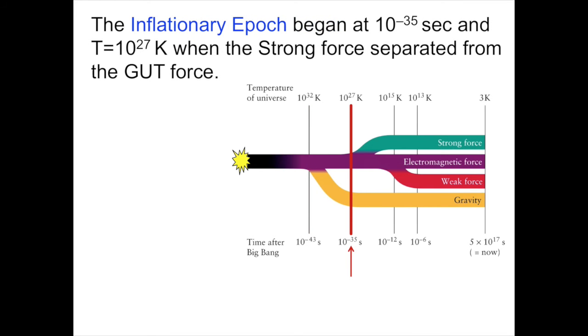This changes at 10^-35 seconds at a temperature of 10^27 degrees Kelvin when we enter the inflationary epoch. The inflationary epoch begins when the strong force separated from the gut force. At this point, there are now three forces in the universe: gravity, the strong nuclear force, and the unified electromagnetic and weak force that we call the electroweak force.